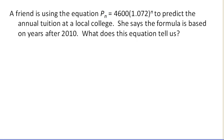A friend is using the equation Pn equals 4600 times 1.072 to the n to predict the annual tuition at the local college. She says that the formula is based on years after 2010, and we're asked, what does this equation tell us? So we're trying to interpret this equation.